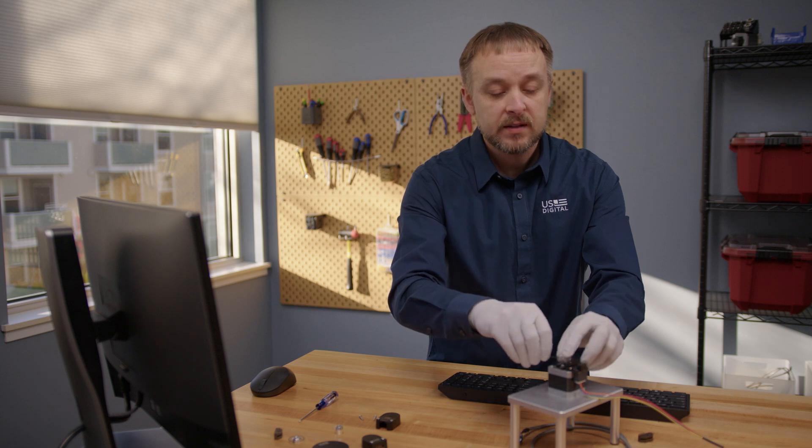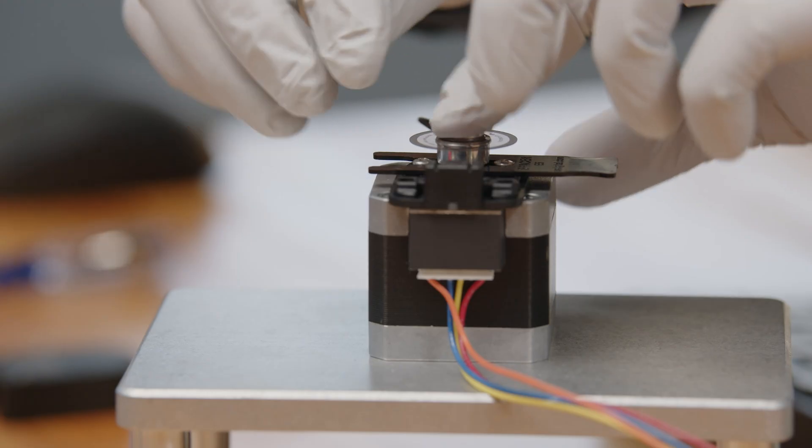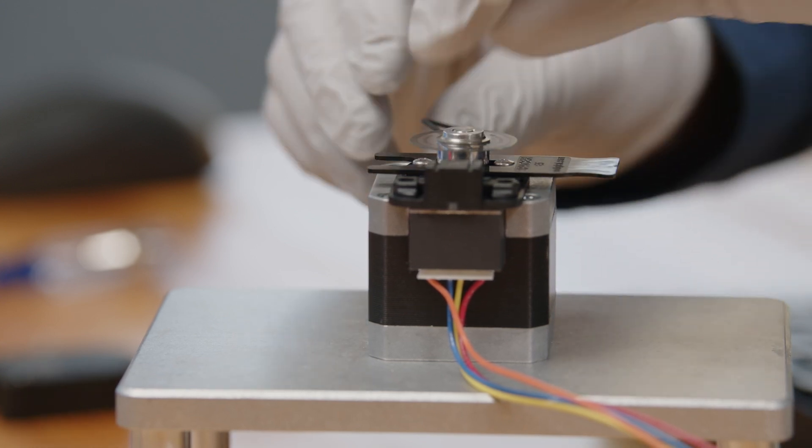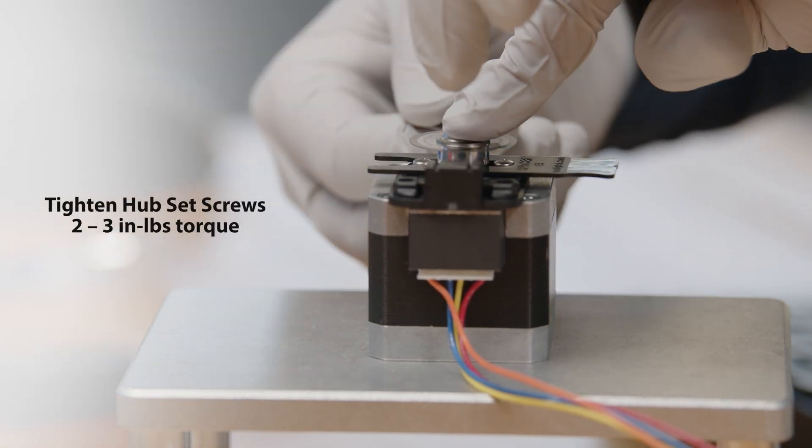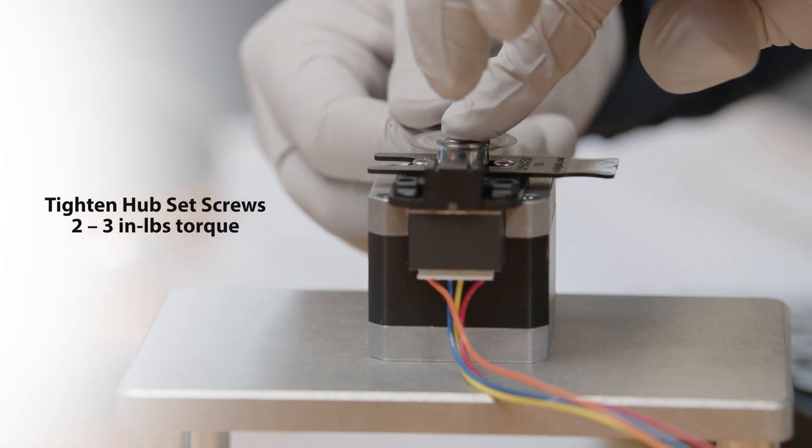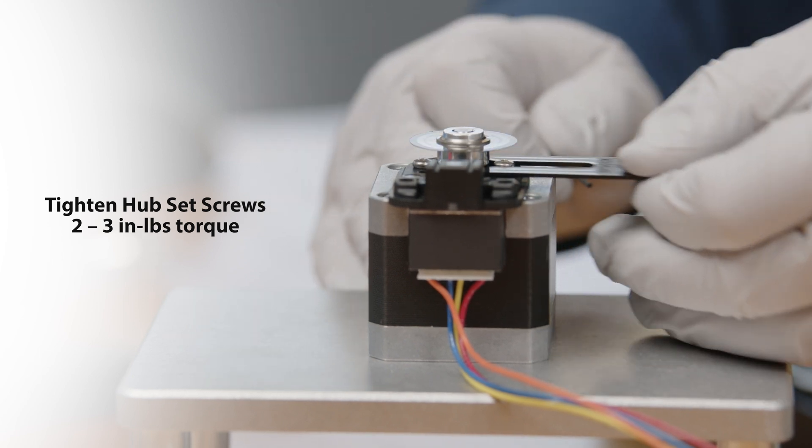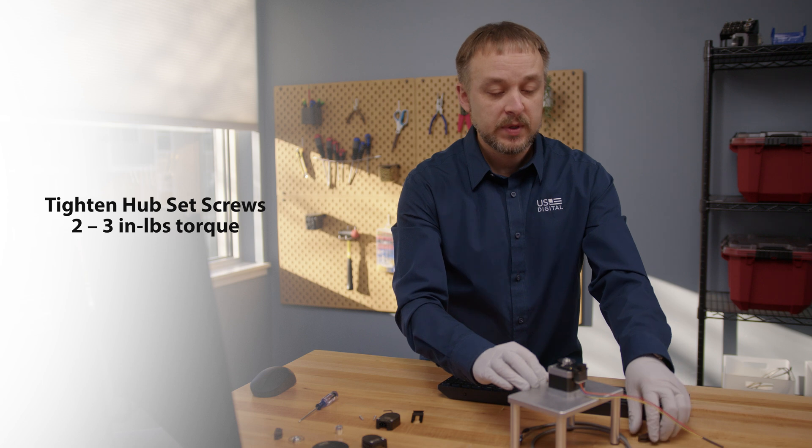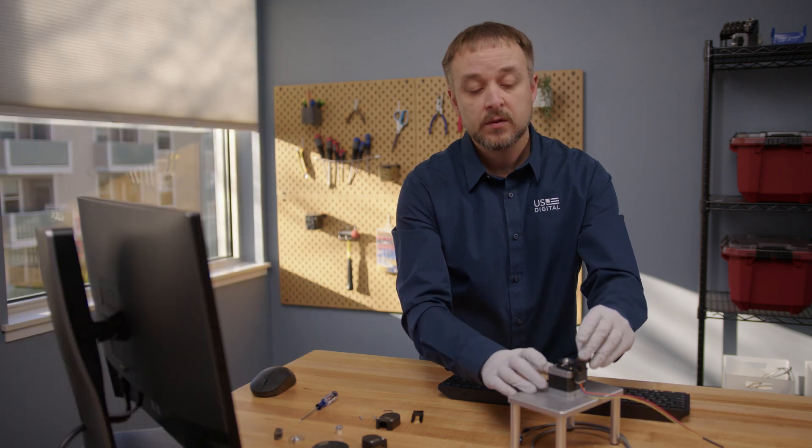We can reinstall that hub disk again using the spacer tool. Some light pressure there so that it's snug against the spacer. Tighten the set screw down. And now our alignment should be complete. So let's retest it.